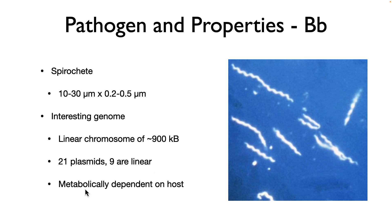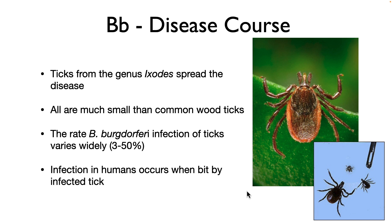This organism is not very free-living in the soil; it's pretty much metabolically dependent on its hosts. This is a vector-borne disease. The ticks from the genus Ixodes spread the disease, and all are much smaller than common wood ticks. Here's a close-up of the deer tick, along with examples of a nymph, a juvenile, and an adult tick — you can see that's the head of a pin, and they are incredibly small. The rate of B. burgdorferi infection of ticks varies widely, from 3 to 50 percent in various surveys. Infection in humans occurs when they are bitten by an infected tick.